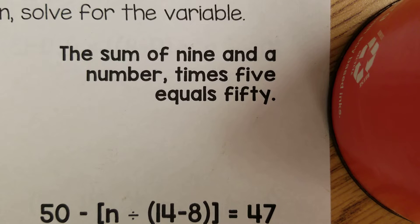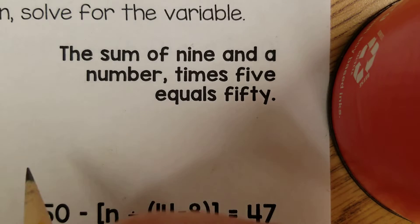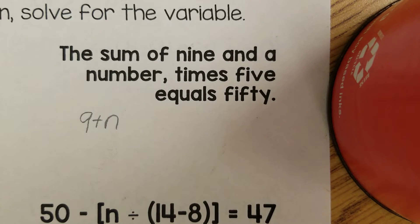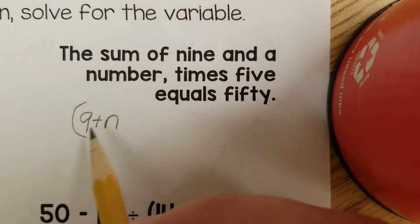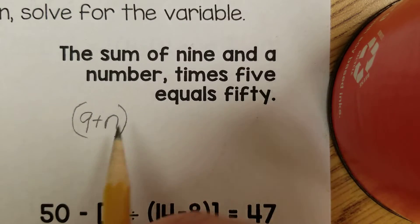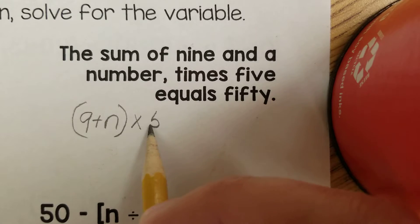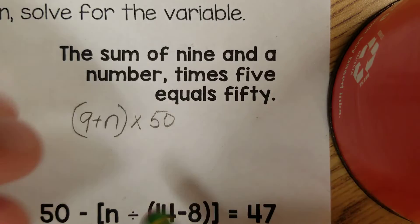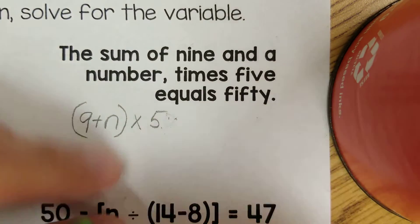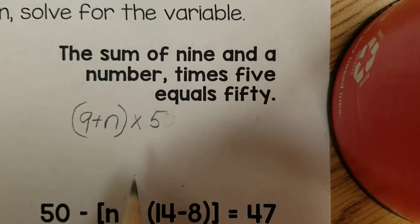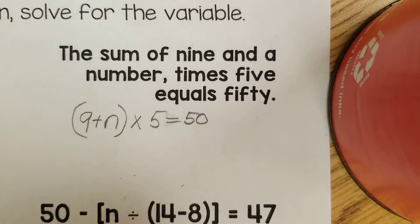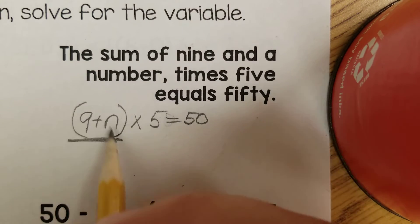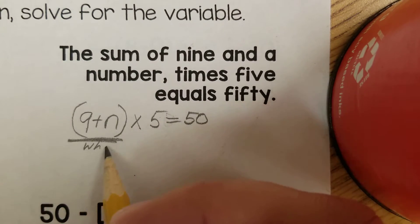Next problem: we have the sum — sum means add — the sum of 9 and a number, so we have 9 plus a number. Now we're going to take that times 5, so I'll put this in parentheses to get that answer first, and then multiply by 5. It equals 50. So our question is: what times 5 equals 50?